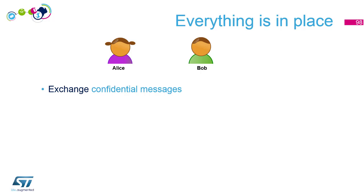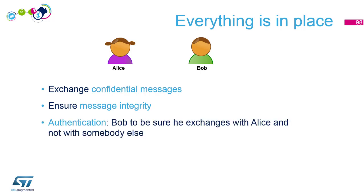About message integrity: we know how to check this thanks to a hash function and some asymmetric or symmetric cryptography. The main known one is a signature mechanism in the asymmetric way. To generate a signature you will use a private key, and you will use a public key to check the signature. The last point was authentication — here we will rely on some challenge mechanism, and if there is a risk of impersonation then we need the help of a certificate authority.